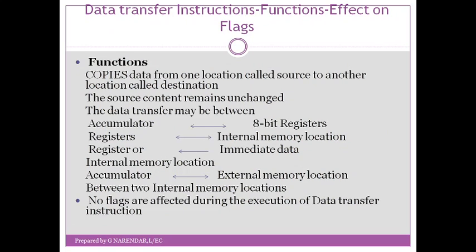We will start with the data transfer instructions. What do data transfer instructions do? A data transfer instruction — the name itself tells that data is transferred, meaning transferring data from one location to another. The location from where you are transferring is called the source location, and the location to where you are transferring is called the destination location. However, it is not exactly a transfer of data but rather a copying of data from source location to destination location.